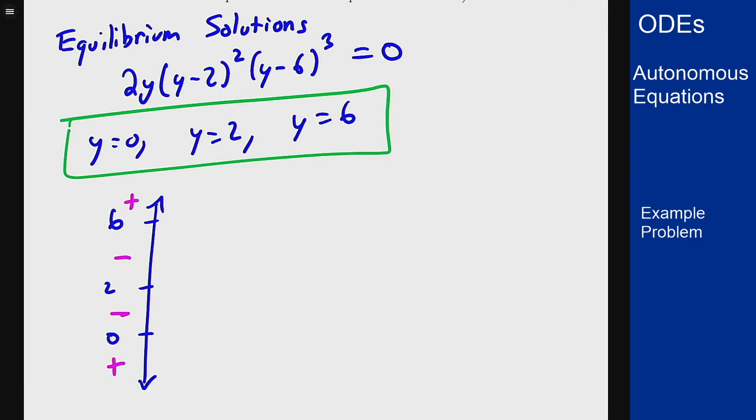So I can now describe stability too. We can see that at 6, because the solutions that are below go down, they go away. And above, they're positive, they also go away. This is unstable.